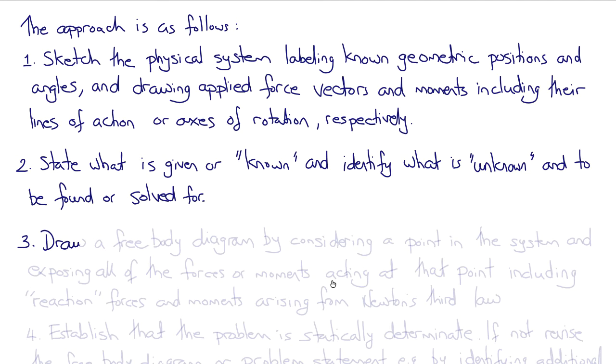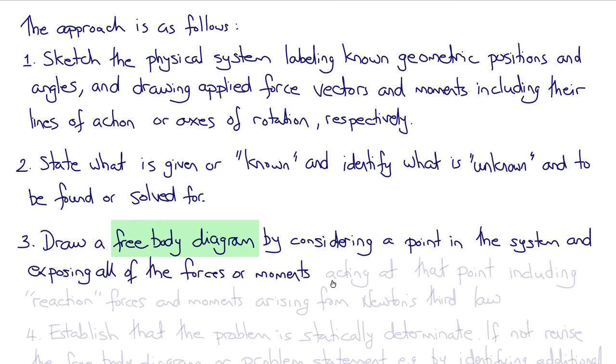The third step is to draw a free body diagram by considering a point in the system and exposing all of the forces or moment acting at that point, including any reaction forces and moments arising from Newton's third law. Sometimes this involves making an imaginary cut in structures or members to expose conceptually that reaction force.